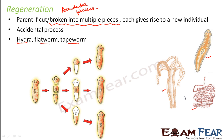Now look at this example of planaria. Suppose if it is broken down, the head has the capacity to give rise to the other body parts. Similarly, the middle portion of the body can give rise to the head and the third portion. This capability of the specialized cells to give rise to different body parts is known as development. So this is the entire process of regeneration.